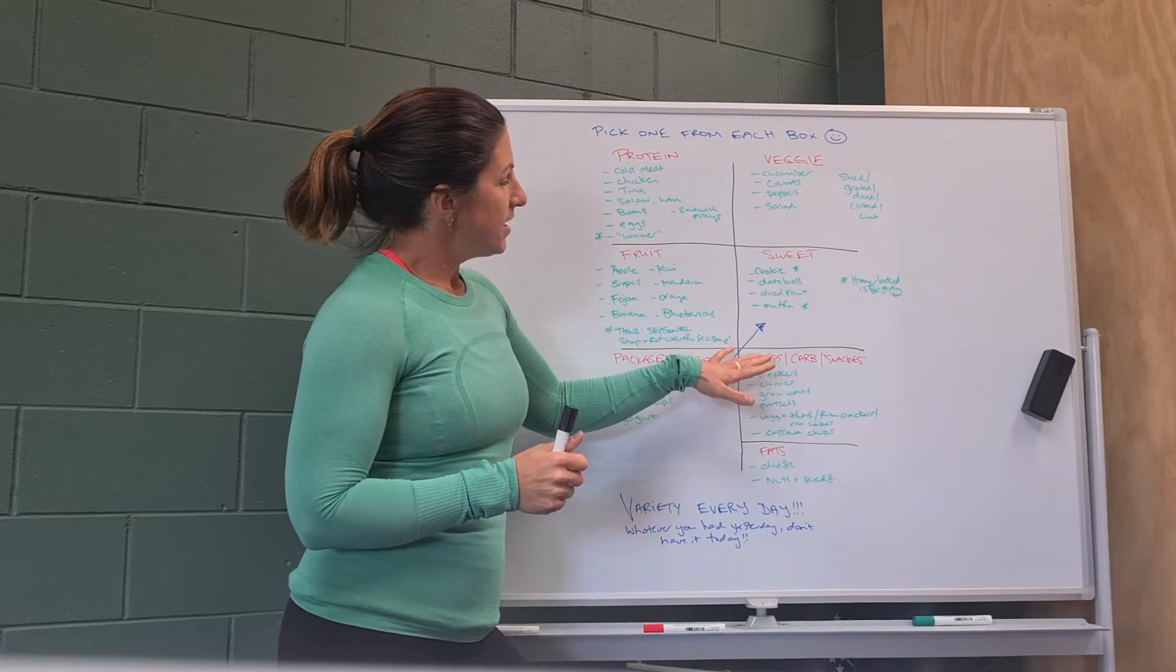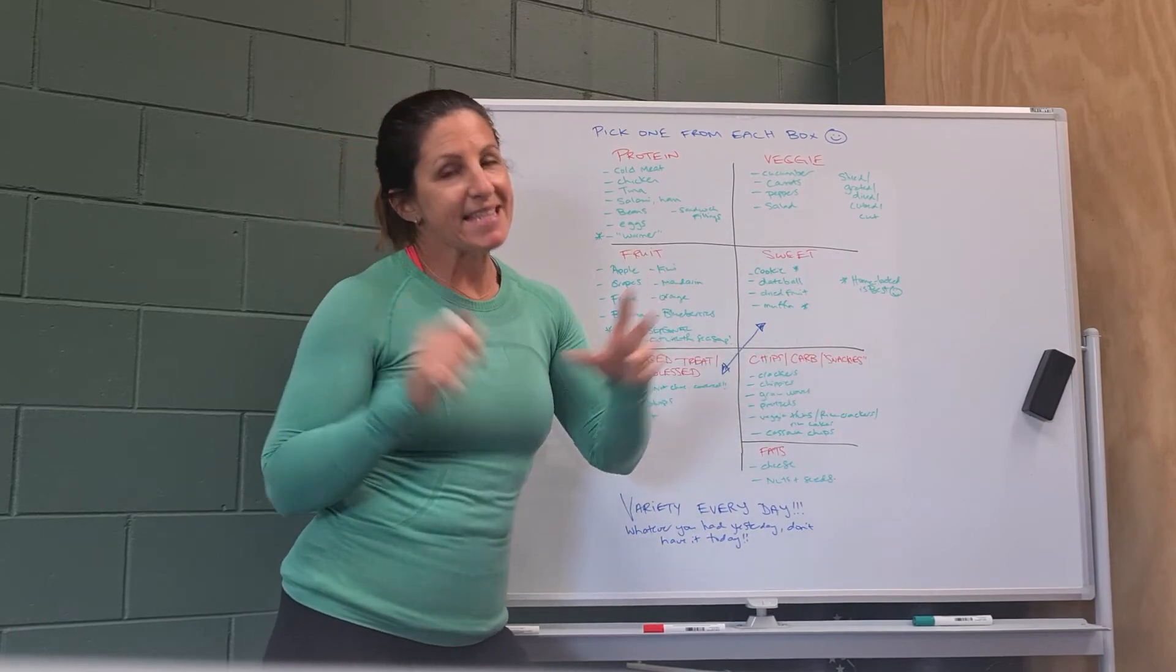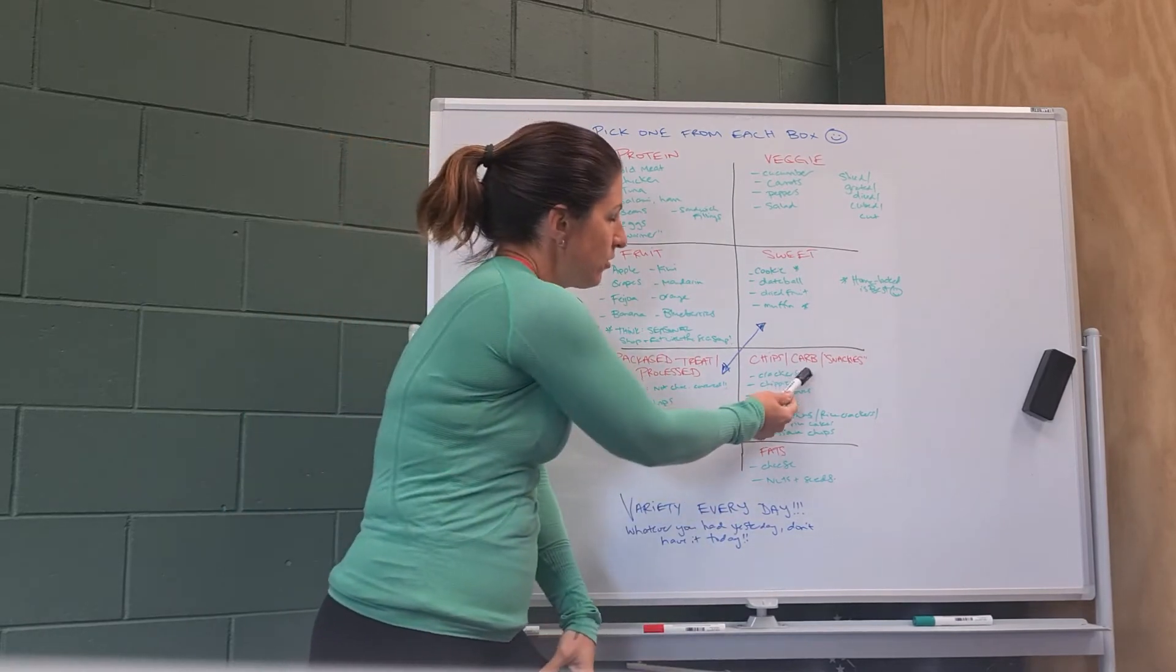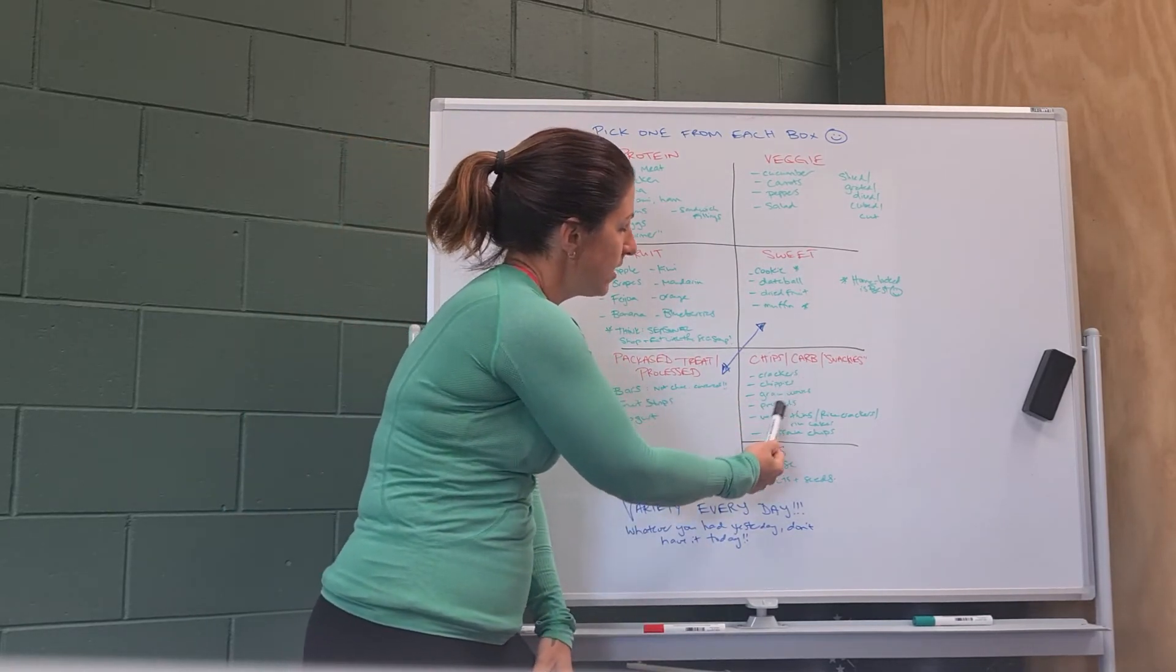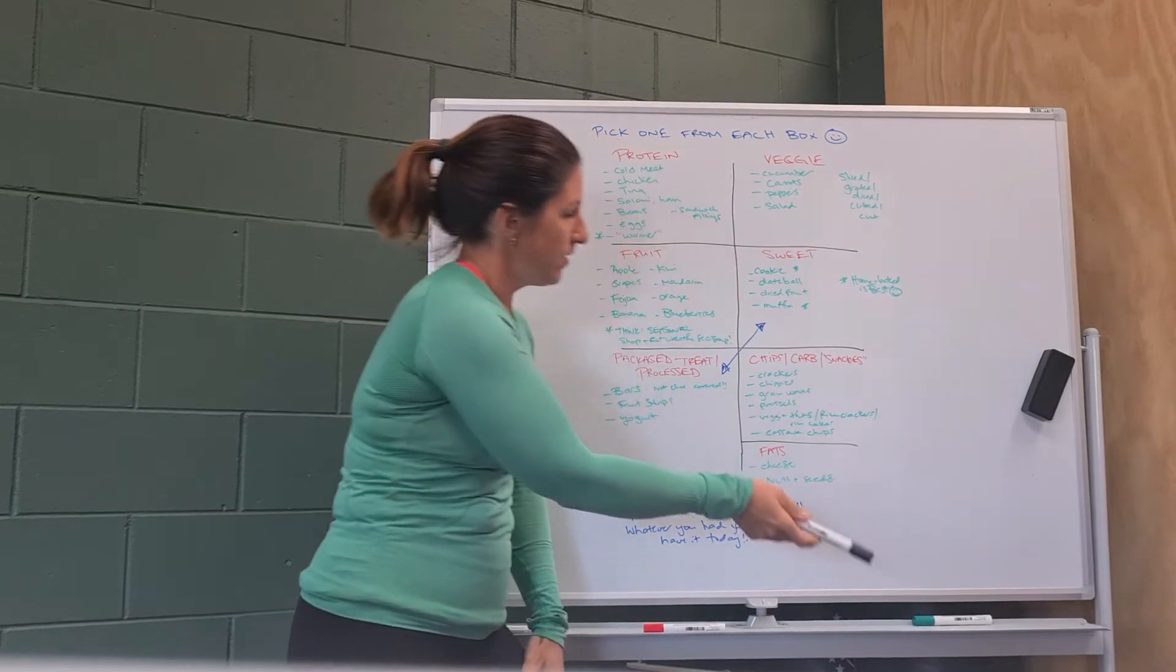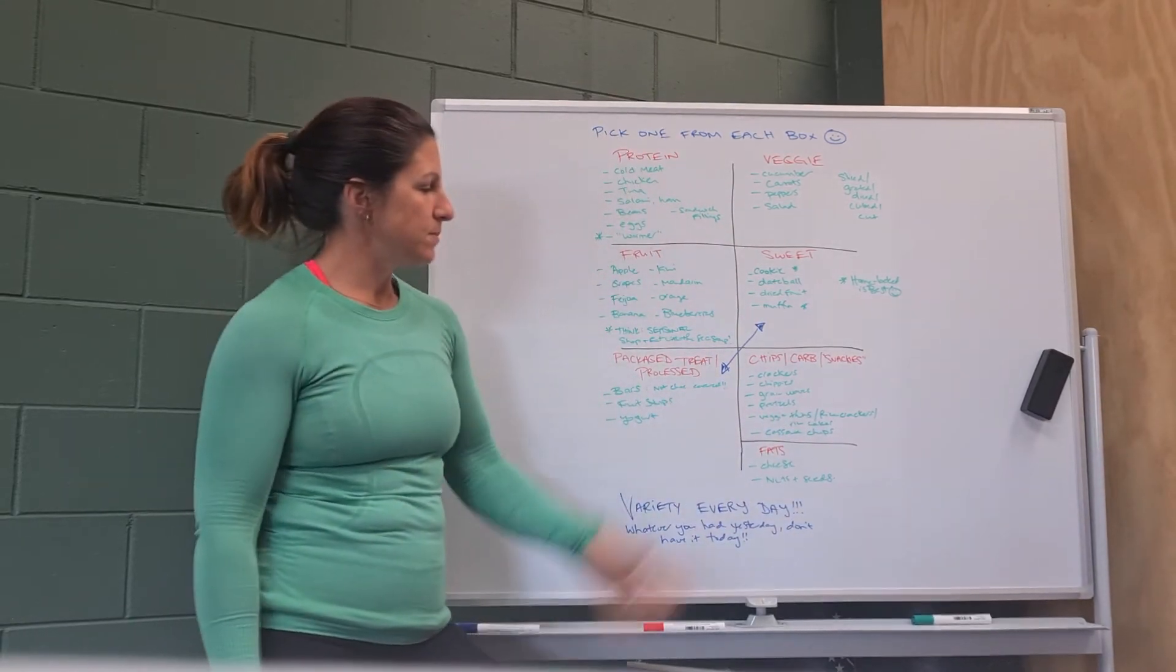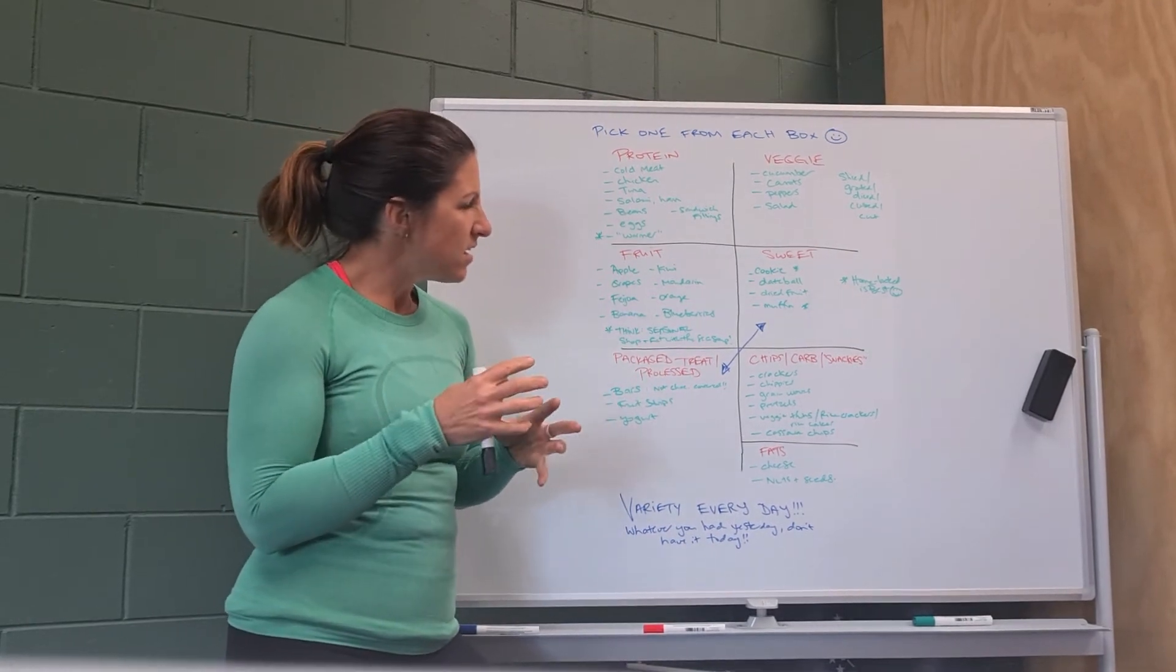Then the next category is here, things that I would call like snackies. So your carby things, your chips and that kind of stuff. So we've got here crackers, chippies, grain waves, pretzels, vegetable chips, rice crackers, rice cakes, cassava crisps, all those kind of snacky things.